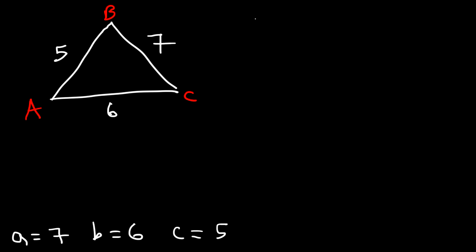The first thing we need to do is calculate S. S is basically half of the perimeter of the triangle. So it's A plus B plus C divided by 2.